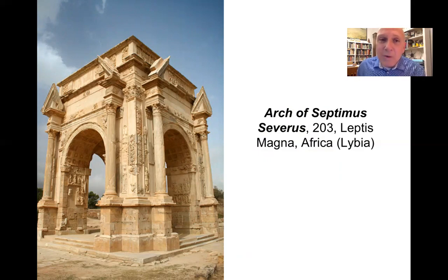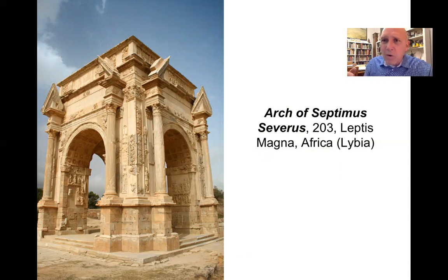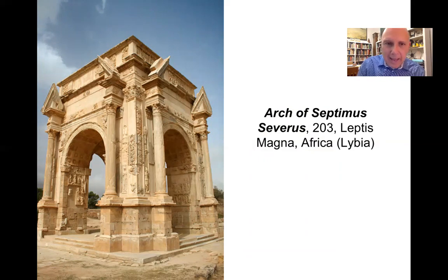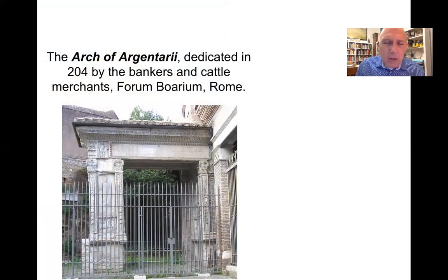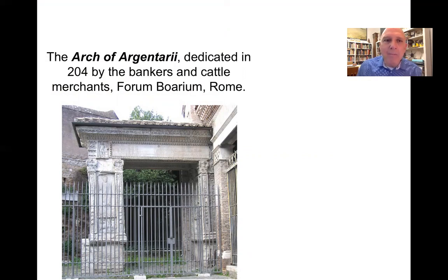The Arch of Septimius Severus in Rome is certainly a major monument, but there are others. In his hometown of Leptis Magna in modern-day Libya, there is a magnificent arch that actually has four entrances and can be entered from four major directions — the Arch of Septimius Severus at Leptis Magna. There are also fragments from the Arch of the Argentari, as the Italians call it, dedicated in 204 during Severus's reign and built by the bankers and cattle merchants of Rome in the Forum Boarium. The arch no longer exists, but its fragments have been incorporated into a medieval church.